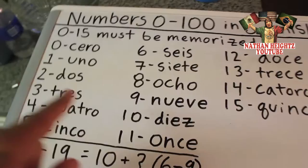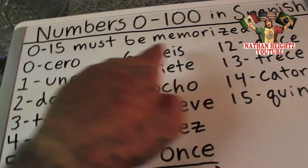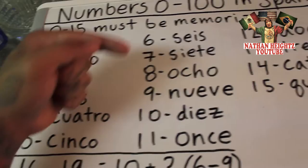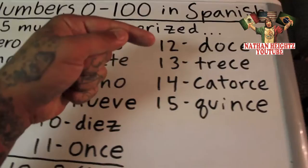First things first, numbers 0-15 must be memorized, okay? They're just words that must be memorized. So we'll start from 0 and count to 15: 0, 1, 2, 3, 4, 5, 6, 7, 8, 9, 10, 11, 12, 13, 14, and 15, okay?